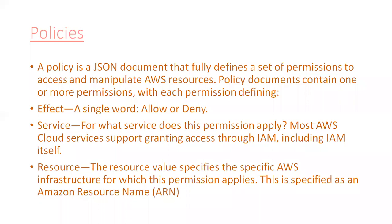In the policy file, what information is written? For example, you have to allow or deny the person. What service do you have to allow or deny the person? And what resource is going to be affected here — which particular resource will apply? You can use the ARN, or the Amazon Resource Name.